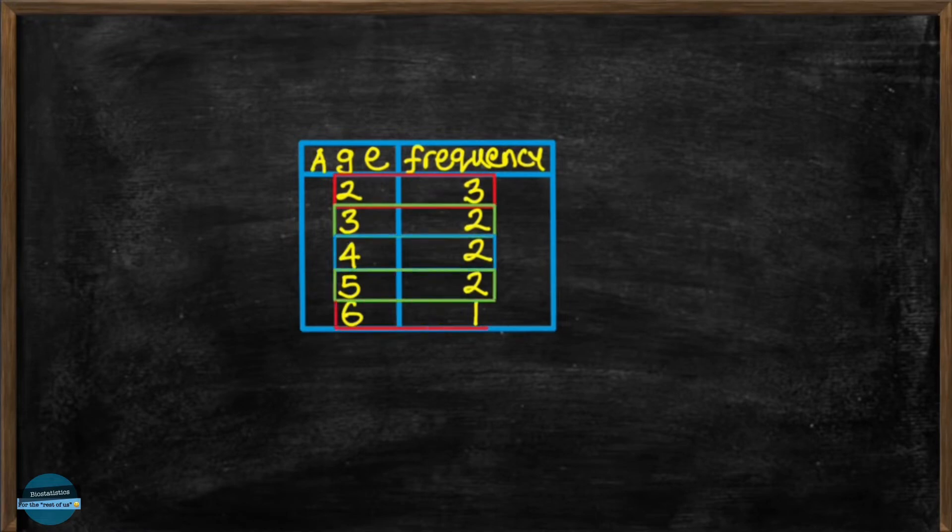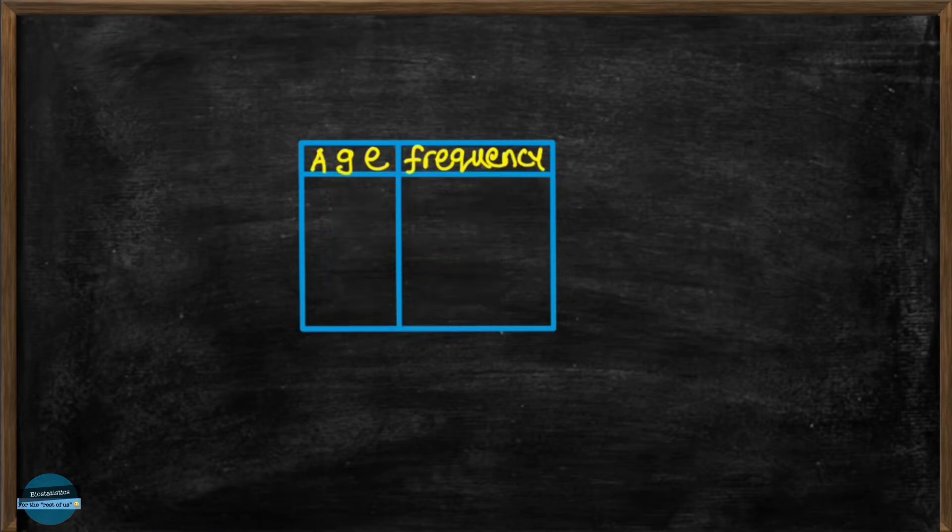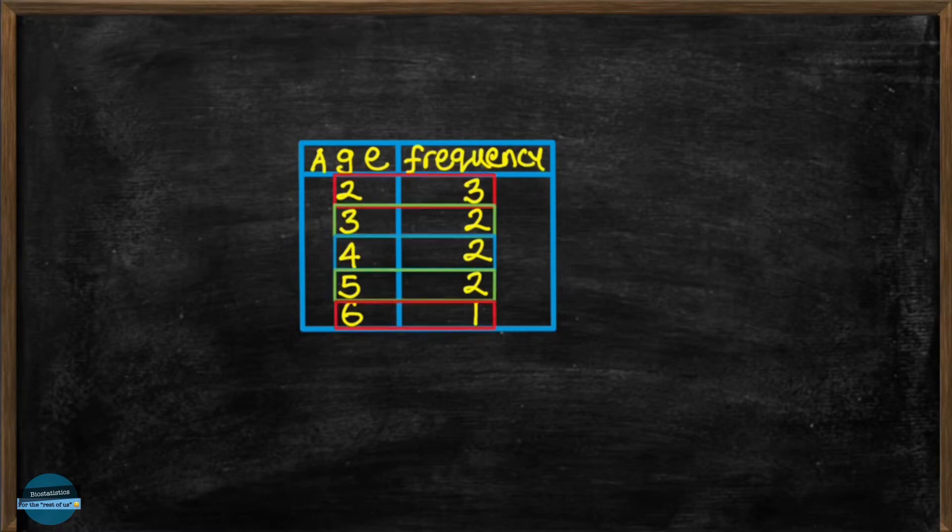So to calculate the mean, we can't just do it the same way as we normally do. Though we'll still need to add all the values and divide by the total number of values, we'll have to recreate the list of values first. So here we have the age of 2 occurring 3 times, and 3 occurring 2 times, and 4 also occurring 2 times, 5 occurring 2 times, while 6 occurs just once.